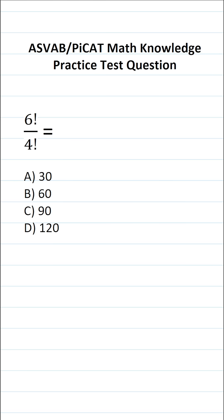This math knowledge practice test question for the ASVAB and PICAT says 6 factorial over 4 factorial equals. If you haven't seen this exclamation point in math, it's called a factorial.